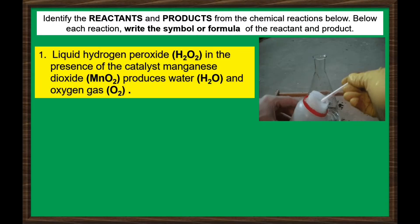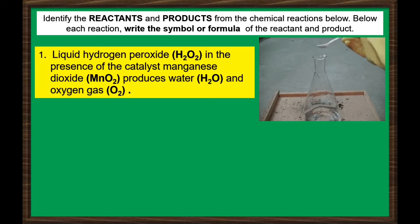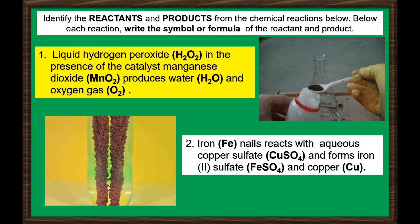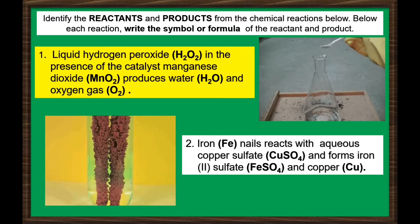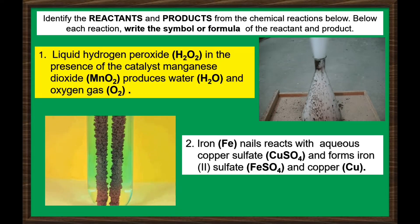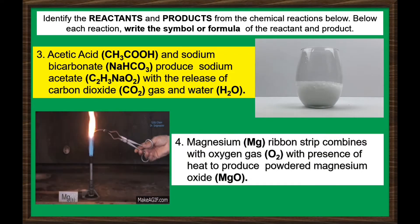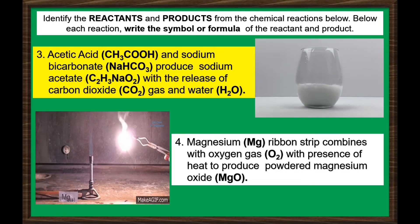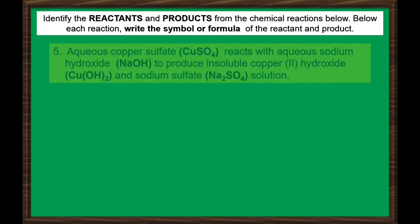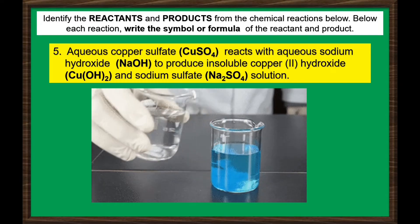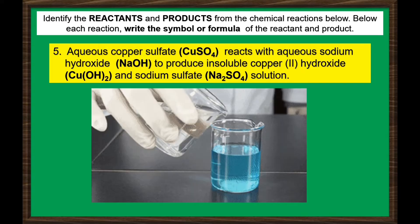First chemical reaction: liquid hydrogen peroxide in the presence of the catalyst manganese dioxide produces water and oxygen gas. Number two: iron nails react with aqueous copper sulfate and form iron 2-sulfate and copper. Third: acetic acid or vinegar and sodium bicarbonate or baking soda produce sodium acetate with the release of carbon dioxide and water. Fourth: a strip of magnesium ribbon combines with oxygen gas in the presence of heat to produce powdered magnesium oxide. And lastly: aqueous copper sulfate reacts with aqueous sodium hydroxide to produce insoluble copper-2-hydroxide and sodium sulfate solution.